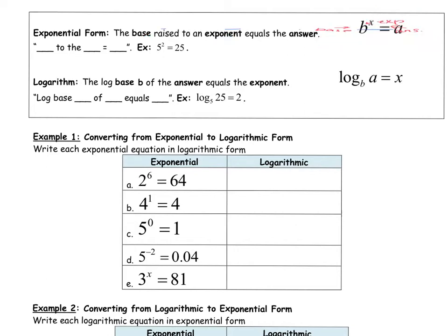When we read this out loud, we would say b to the x equals a. That's how you would read that format. Or if you wanted to read this problem out loud, you would say 5 to the second power equals 25. So we're pretty familiar with that.